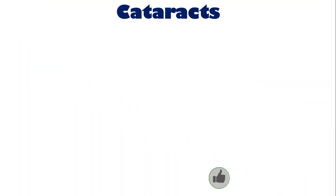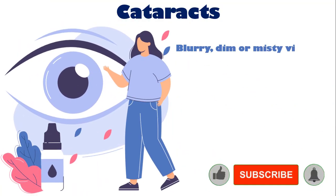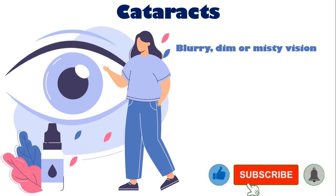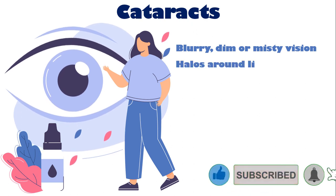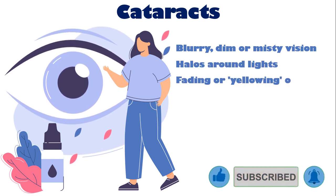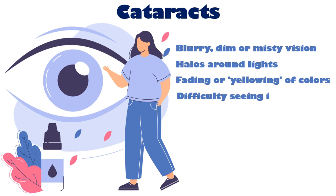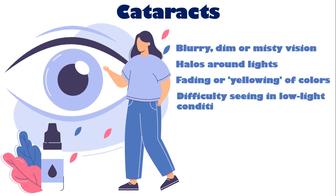Affected patients often experience blurry, dim, or misty vision, halos around lights, fading or yellowing of colors, and difficulty seeing in low-light conditions.